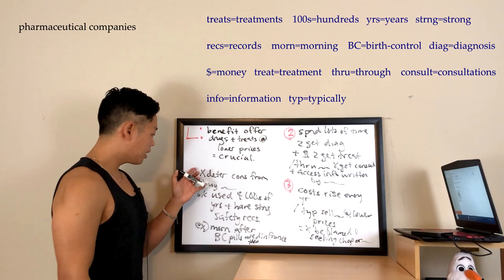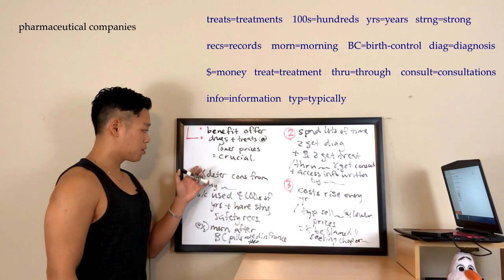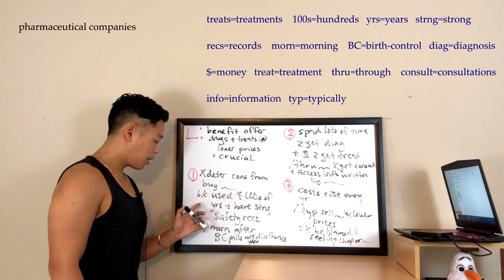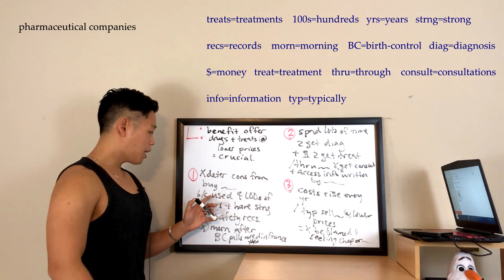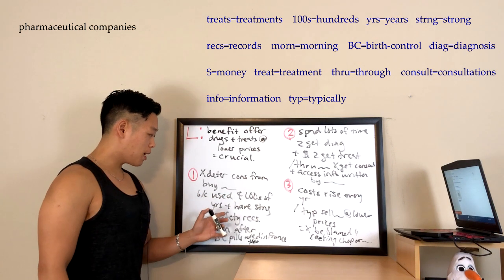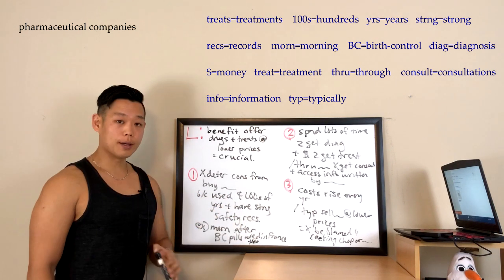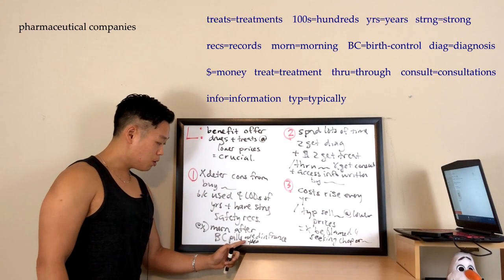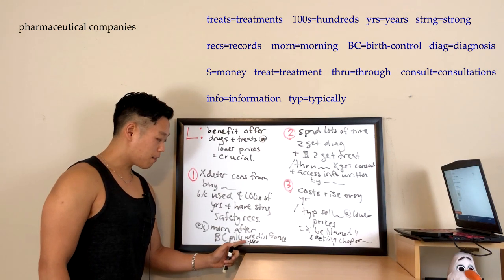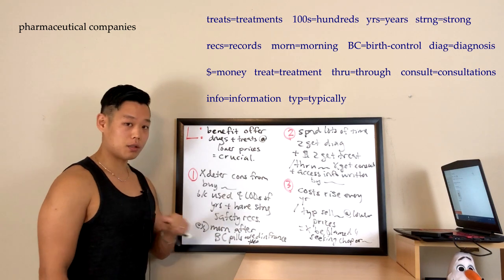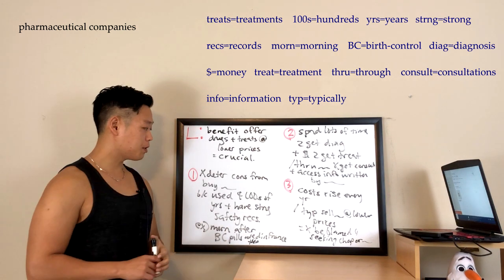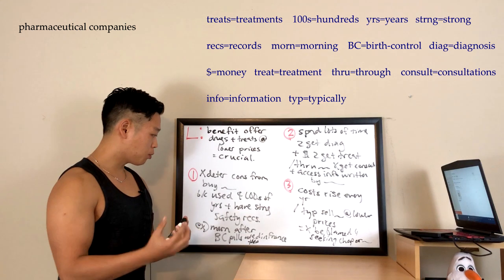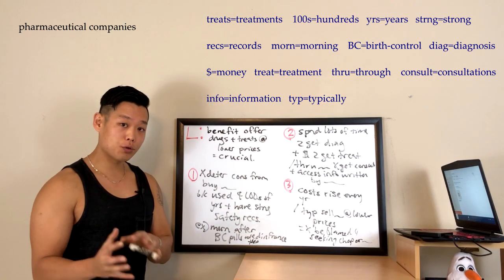The first argument is that the fact that some medications offered online are not FDA approved should not deter consumers from buying them, because these herbal remedies and alternatives have actually been used for hundreds of years and have strong safety records in their respective nations. For example, the morning-after birth control pill has been used in France for many years but has just started being tested in the United States. What the professor is hinting at is that America might be a few steps behind other countries when it comes to alternative treatments and herbal remedies.